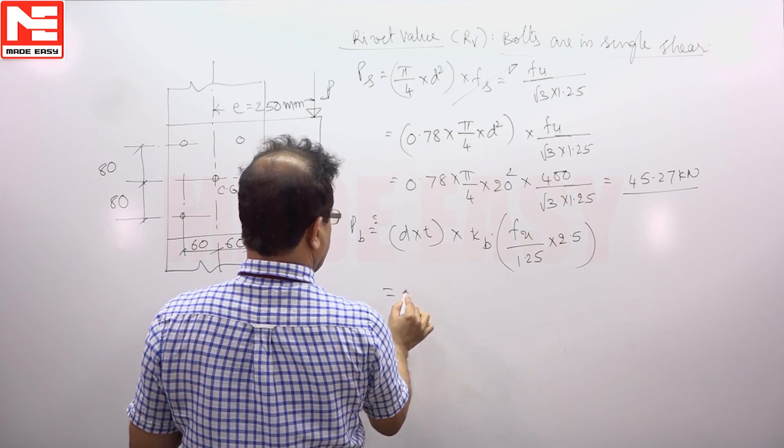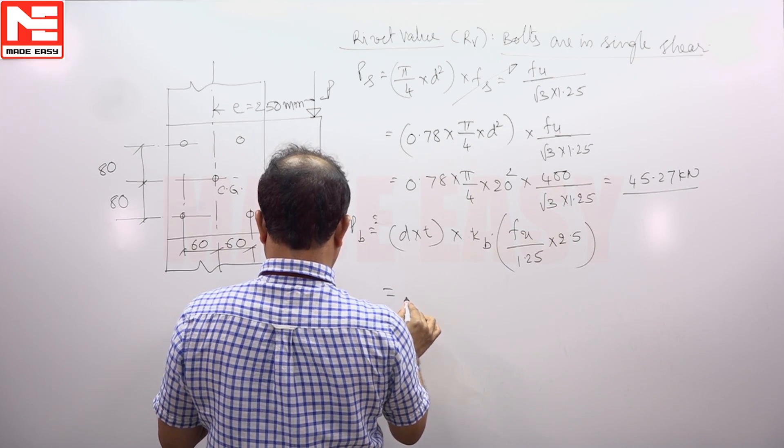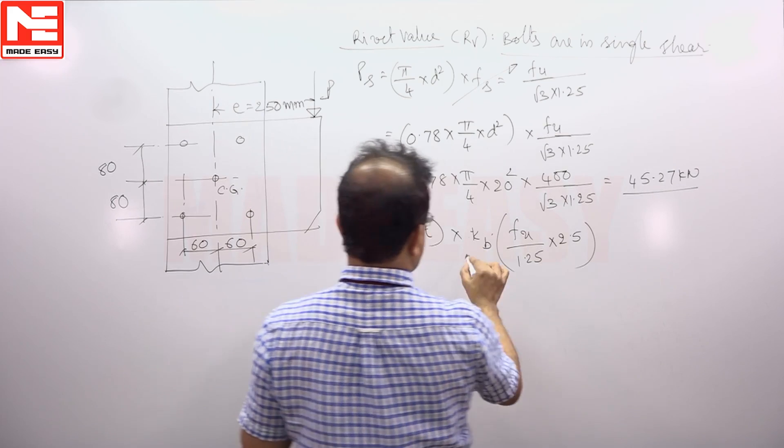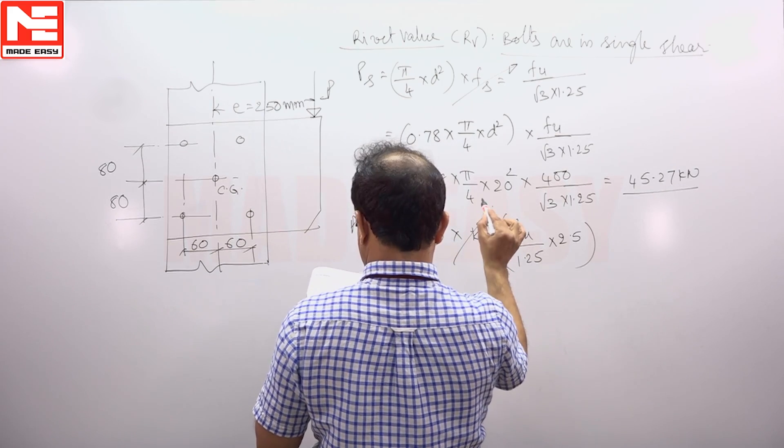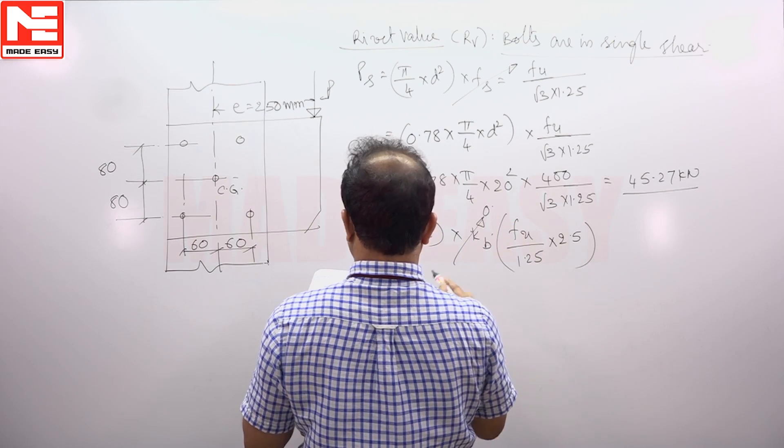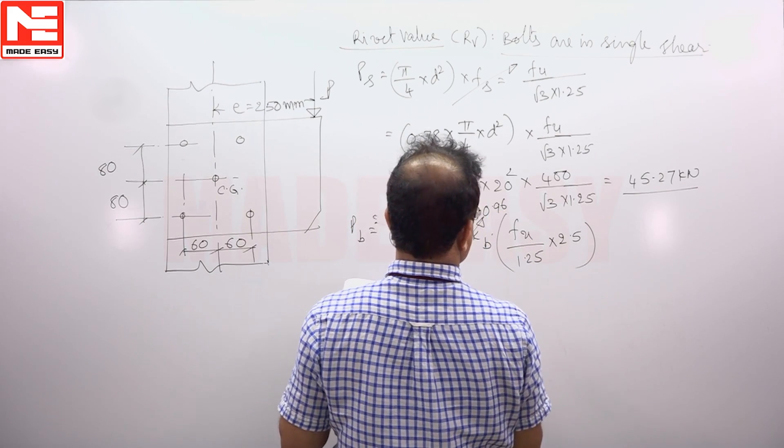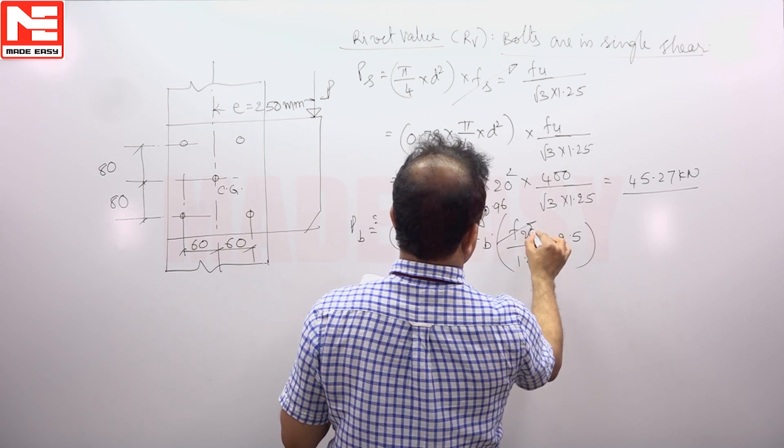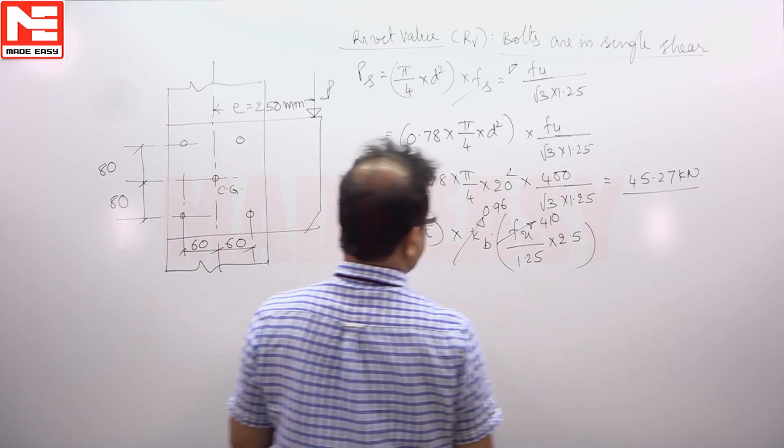Kb is given to take as 0.96. Fu we have to take as 410 for the plate.